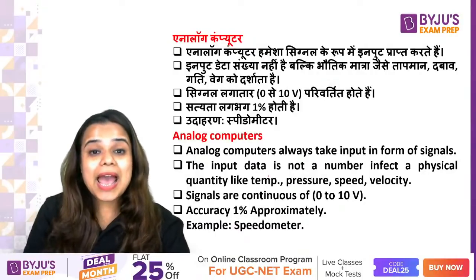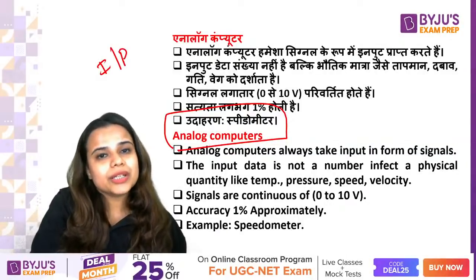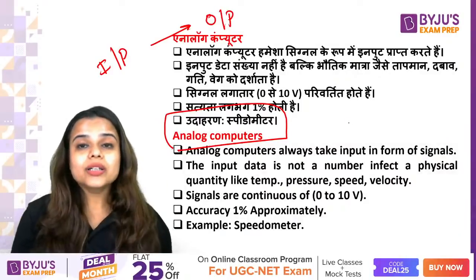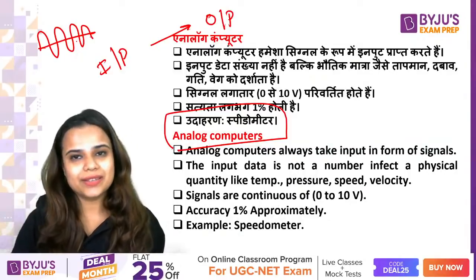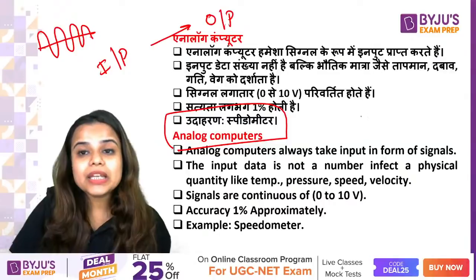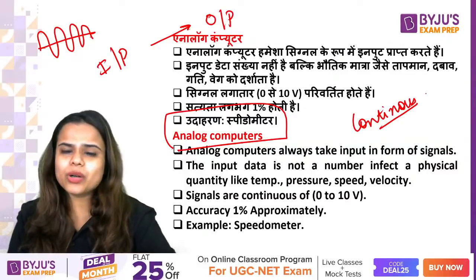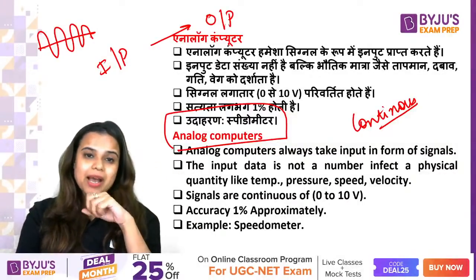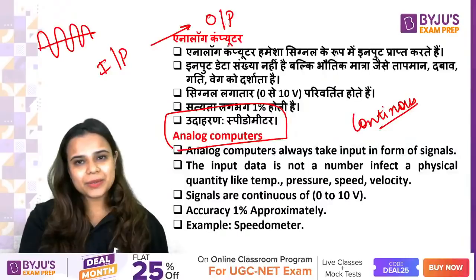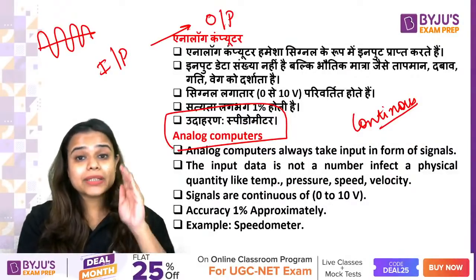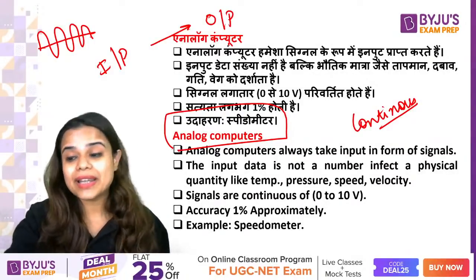An analog computer is a very simple computer that takes input in the form of analog signals - continuous signals. A simple example is your car's speedometer. When you drive the car, the speedometer and temperature gauge work on analog signals. The signals are continuous and accuracy can be reduced. So this is our analog computer.